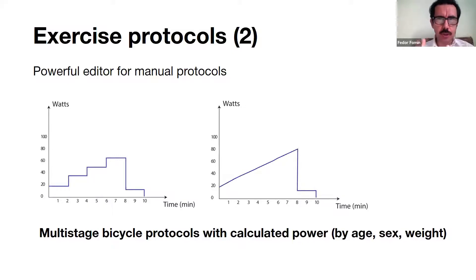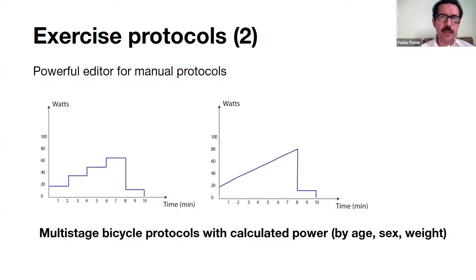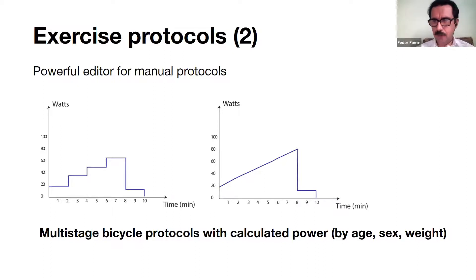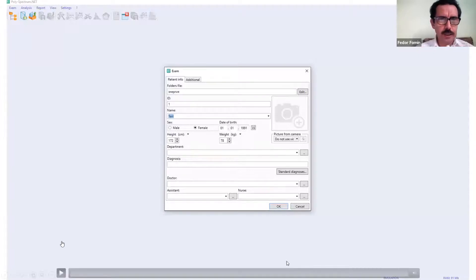Why is that important? In two cases: when you deal with athletes and when you deal with children. There are protocols that require workload in watts per kilogram of body weight. If you have persons weighing 45 kg or 65 kg and you set up a protocol where the first stage is 0.5 watts per kilo, the next one watt per kilo, and so on — the system will automatically recalculate and perform this step-by-step exercise according to the formula. It's very interesting, but it works only for bicycle.